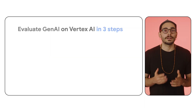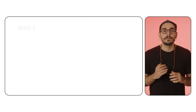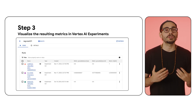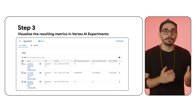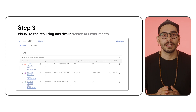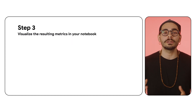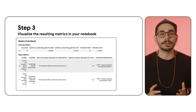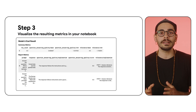Finally, you collect and visualize the resulting metrics. Vertex AI Experiments provide an intuitive interface for tracking and visualizing your evaluation results. You can compare different runs, analyze metrics, and gain insights into your Generative AI application's performance. You can also access and visualize these metrics directly within your notebooks. Vertex AI Generative AI evaluation gives you easy access to metrics, providing both per-instance and aggregated evaluation tables.